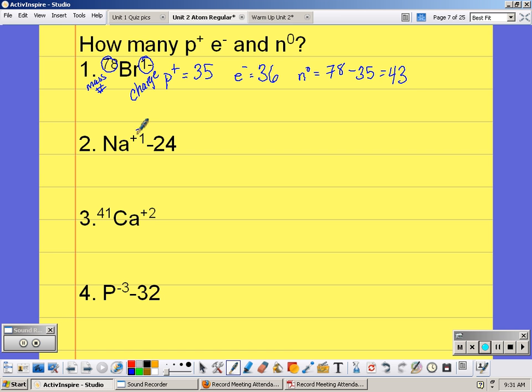So this plus 1 in the upper right hand corner is my charge. The number that comes after the dash is my mass number. It's sodium, so element sodium is number 11 on the periodic table. It has a plus one charge, which means I have to have one more proton than electrons.